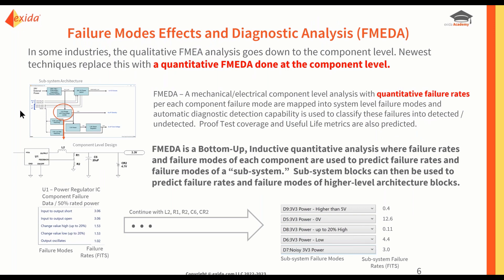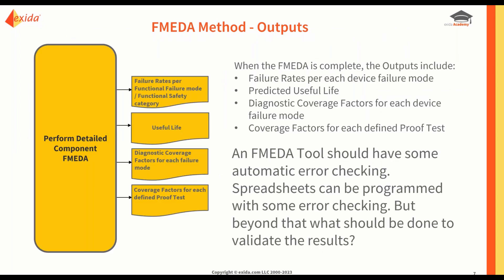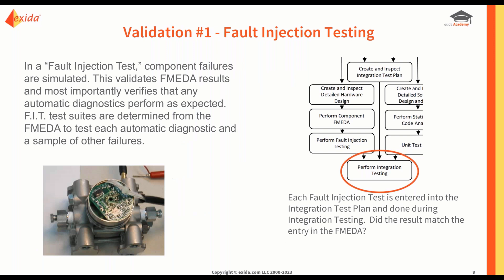If you've watched before, you know what a failure mode effects and diagnostic analysis is. But for first-time viewers, FMEDA is a bottom-up, inductive approach to quantitatively predict failure rates, failure modes, and a number of other important reliability mechanisms. An FMEDA tool should absolutely have at least some automatic error checking, and perhaps you can program your spreadsheet for that. But beyond that, what should we do to validate FMEDA results?